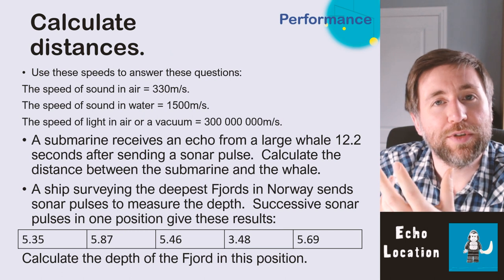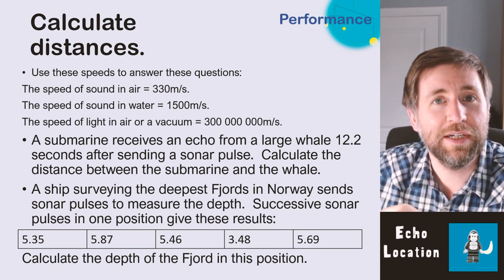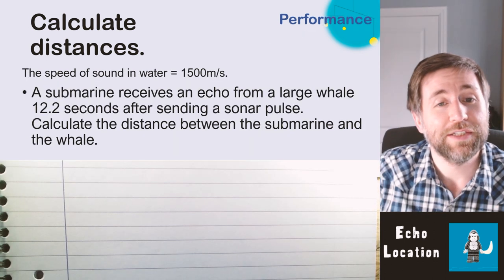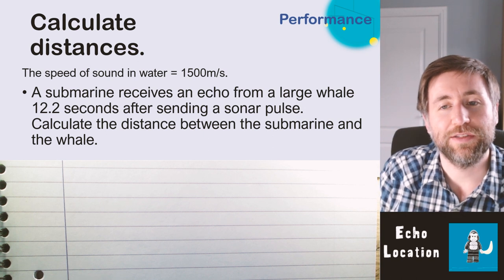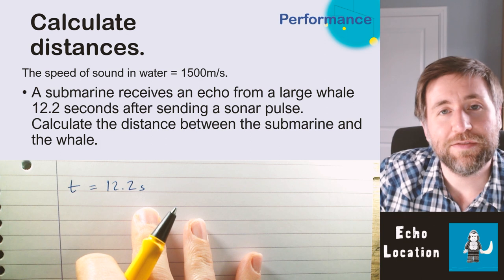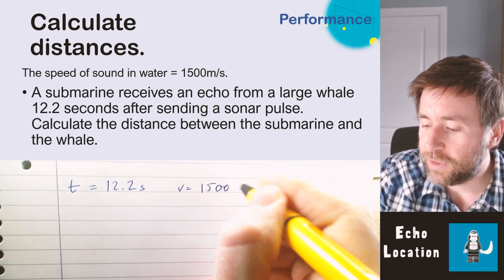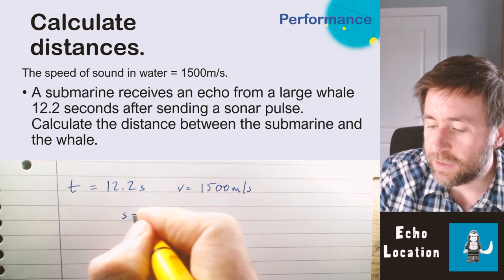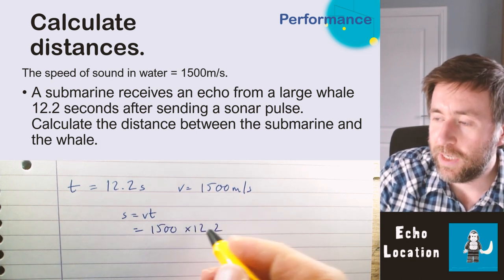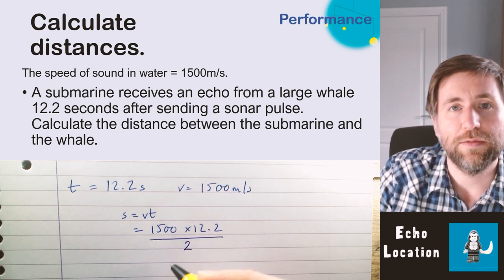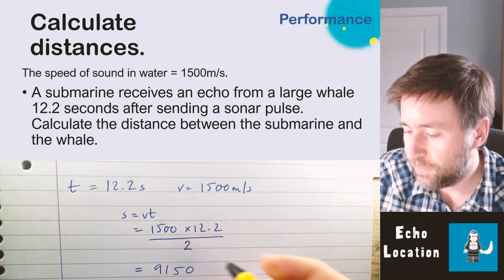Now some tricky questions on calculating distances using ultrasound. A submarine receives an echo from a whale 12.2 seconds after sending the sonar pulse. We use the speed of sound in water: 1500 m/s. Using distance = speed × time: 1500 × 12.2 = 18,300 m total, divided by 2 because the wave travels there and back, giving 9,150 meters.